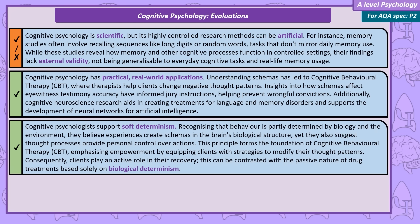The final evaluation is based on the free will-determinism debate. Cognitive psychologists argue for soft determinism — they agree that to an extent, behaviour has biological and environmental causes, as experiences form schemas that run on the biological hardware of the brain. However, they argue that thought processes allow individuals to make the final decision and have some control over their behaviour. This is the basis of CBT and is often argued to be empowering, giving clients the tools they need to change their patterns of thinking and an active role in their recovery, compared to the passive role of biologically deterministic drug treatment.